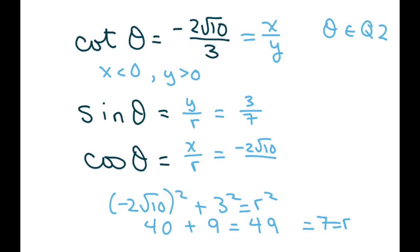So that's going to be 3 over 7 and negative 2 square root of 10 over 7. And that's your final answer. Thank you. Have a nice day.